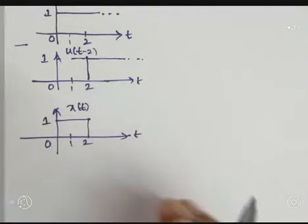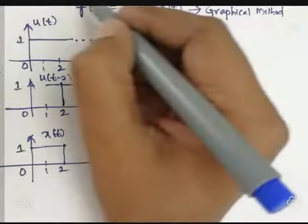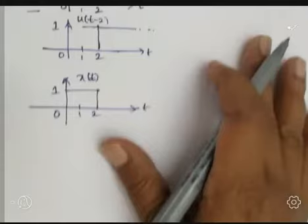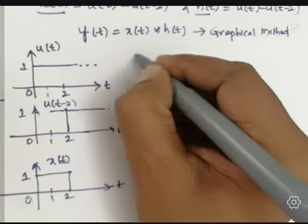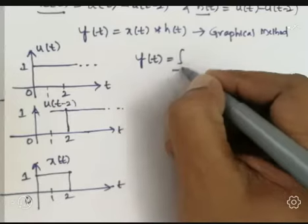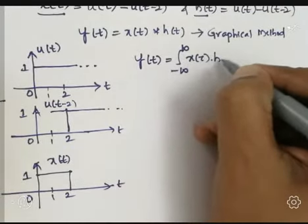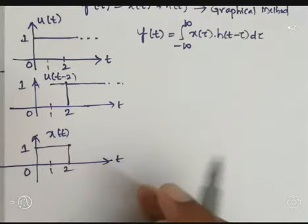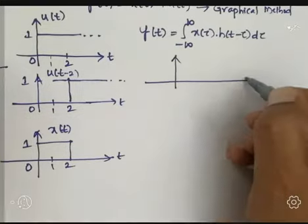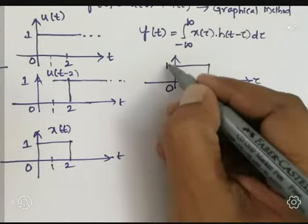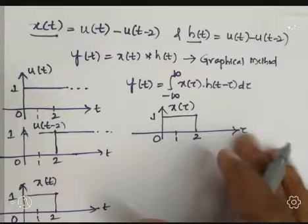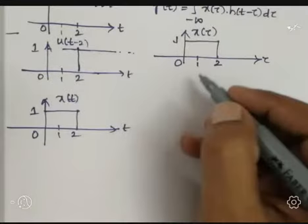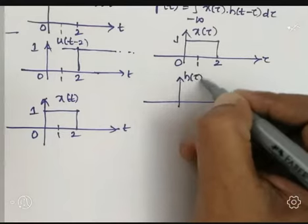x(t) equals u(t) minus u(t-2), and h(t) is the same thing. To find the convolution between these two signals, we use the formula: y(t) = integral from minus infinity to plus infinity of x(τ) · h(t-τ) dτ. The index here is τ, so we express the same signal in terms of τ. x(τ) has amplitude 1 for the duration 0 to 2.